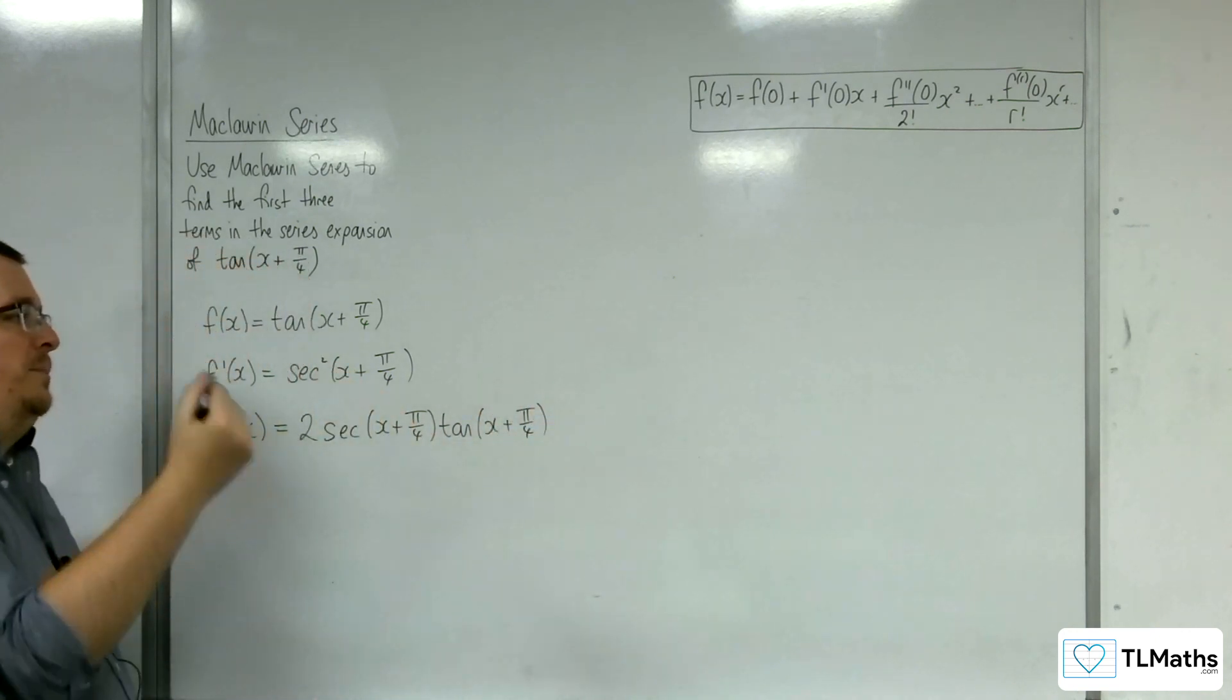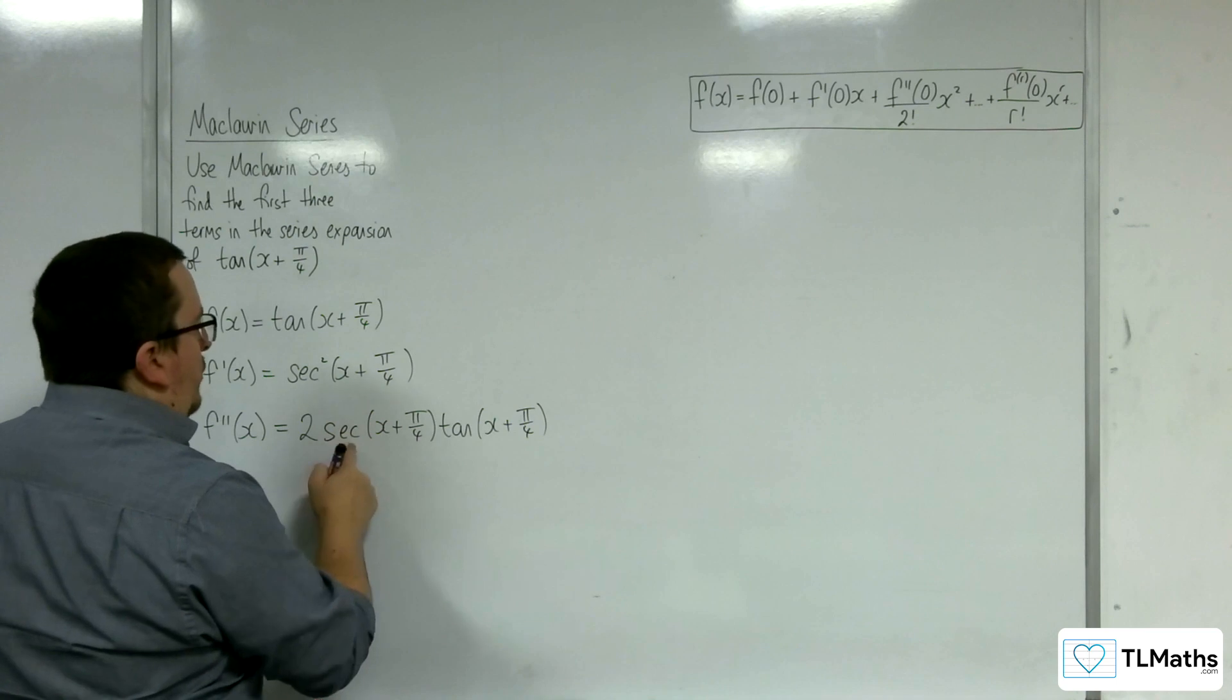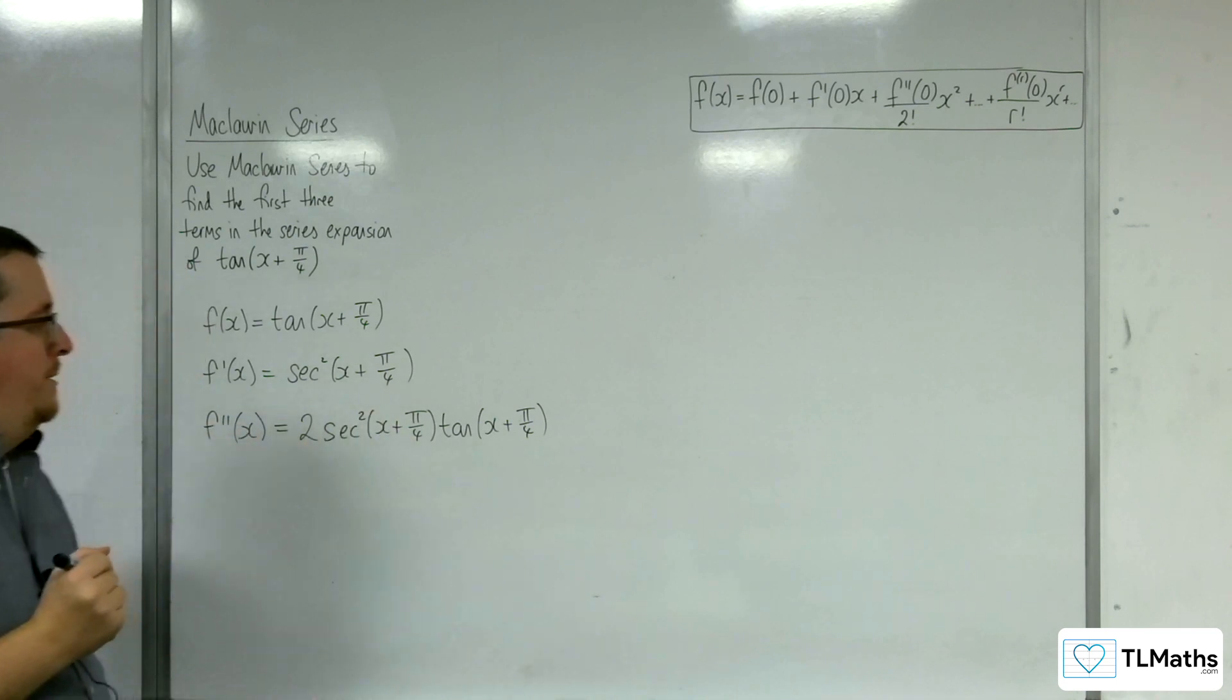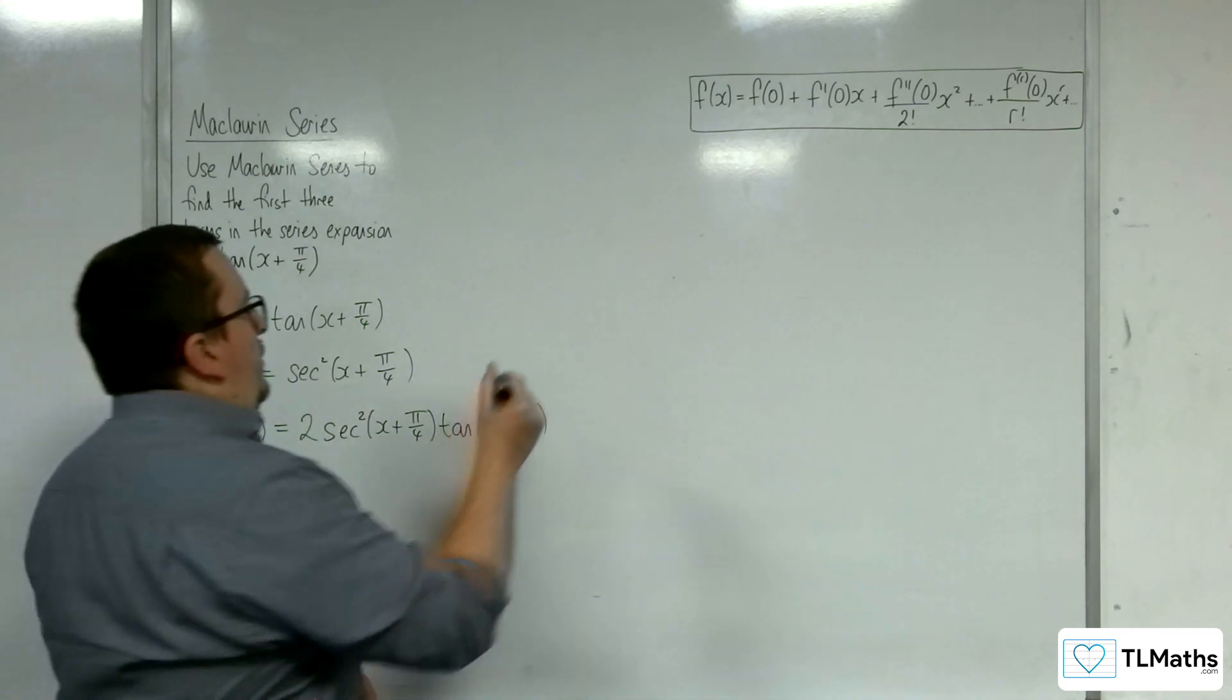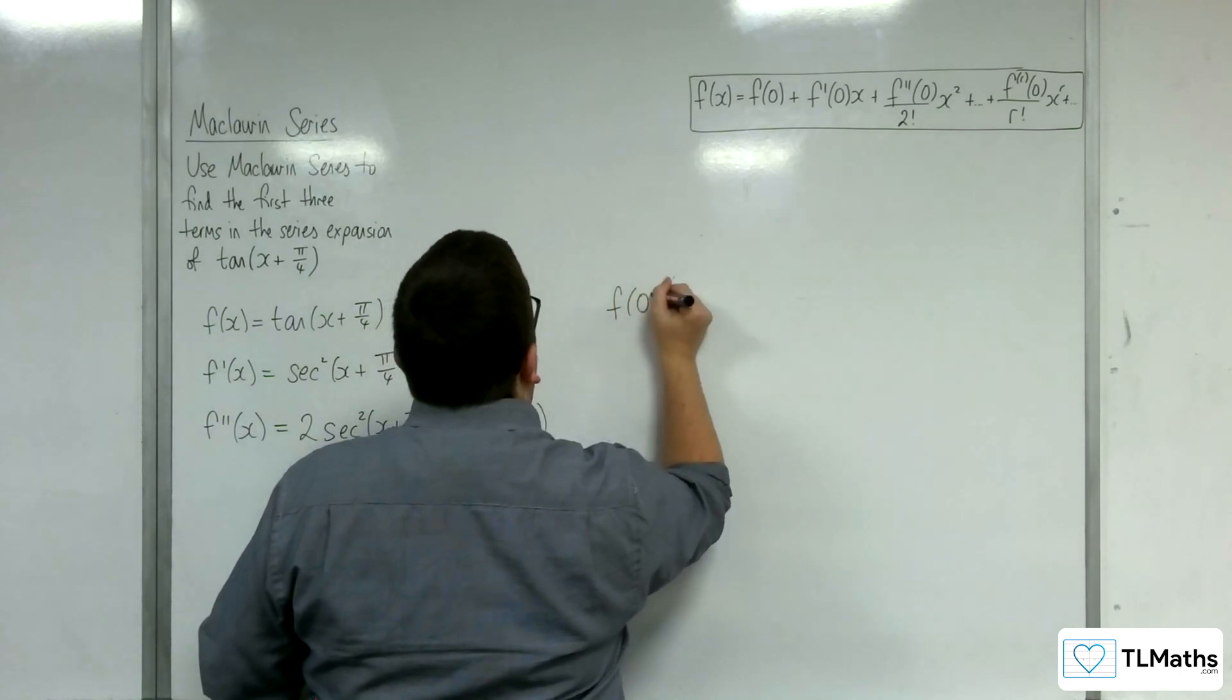And then you'd have sec to the power of 1, and so that would multiply with that sec, so you'd have sec squared.